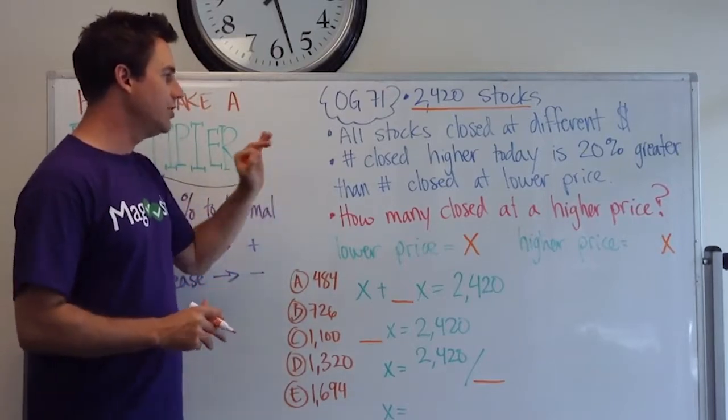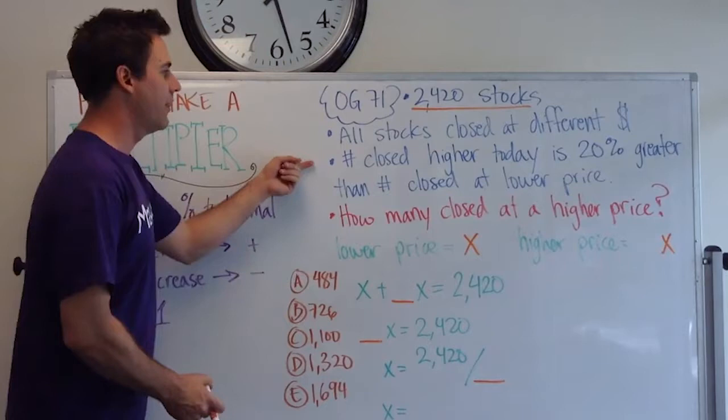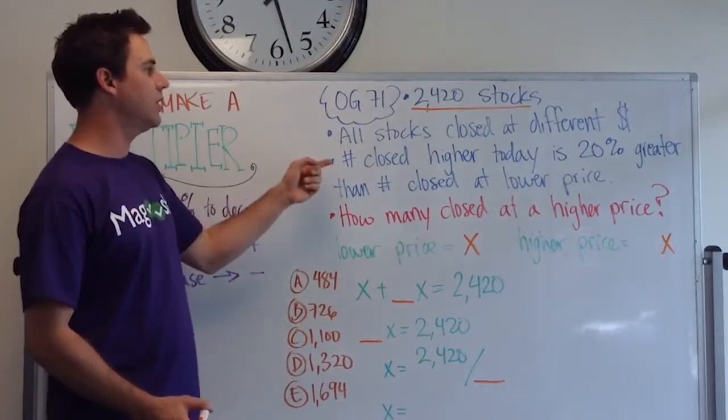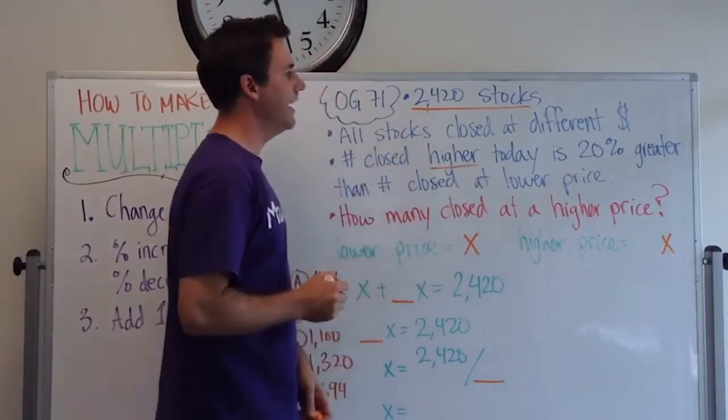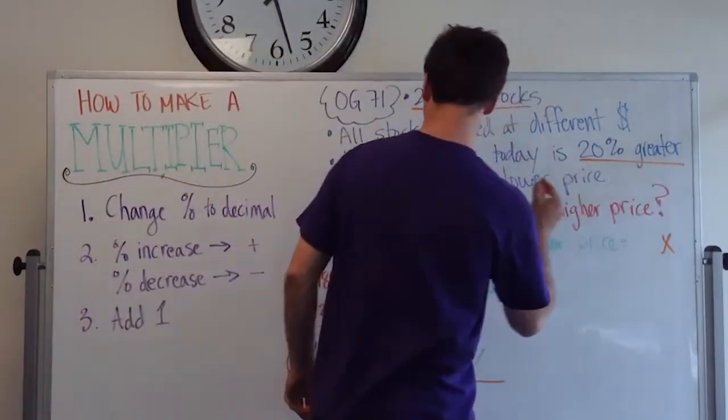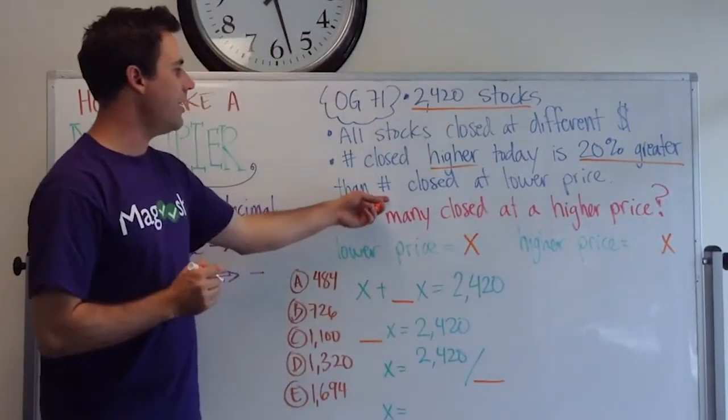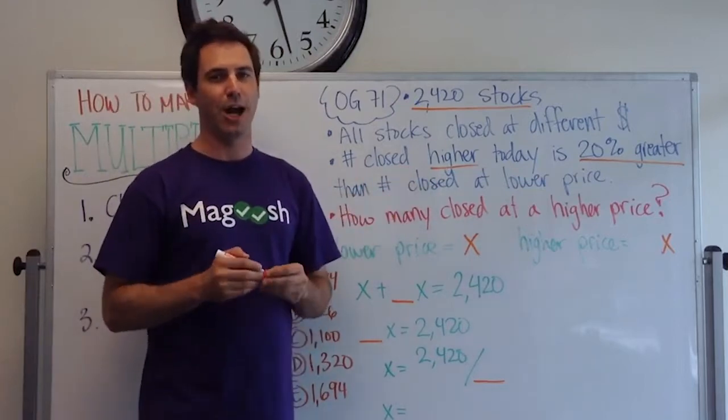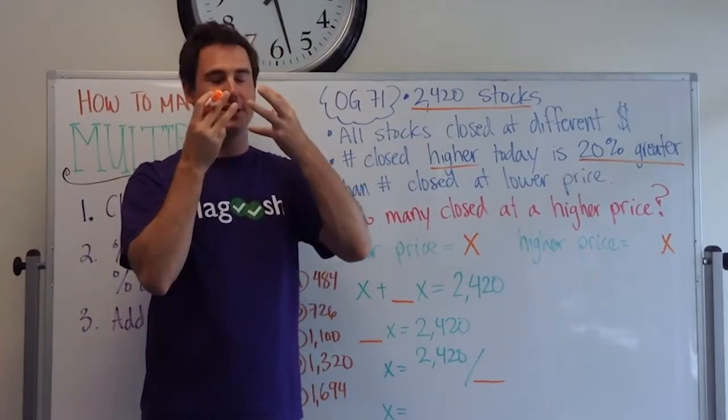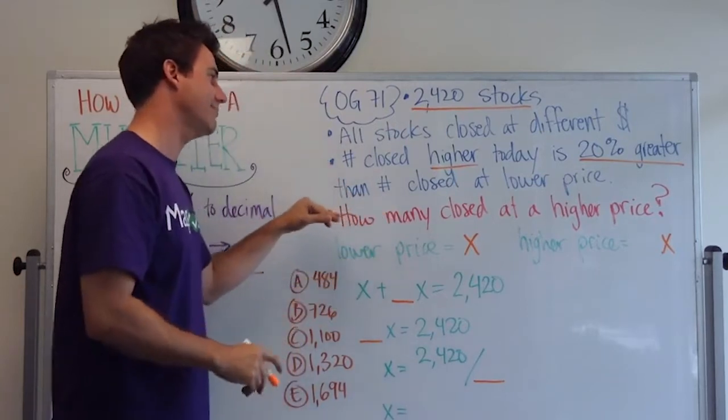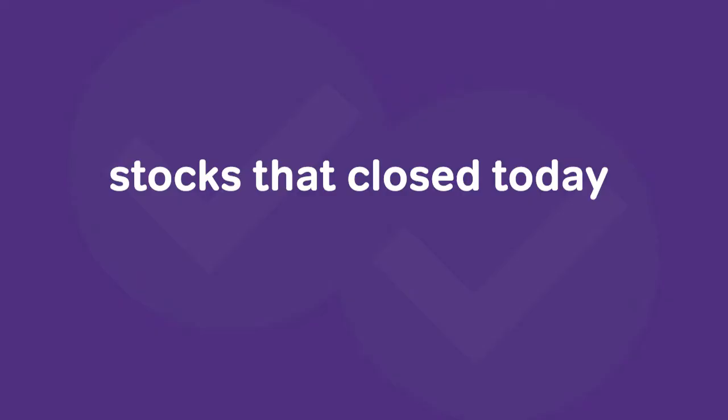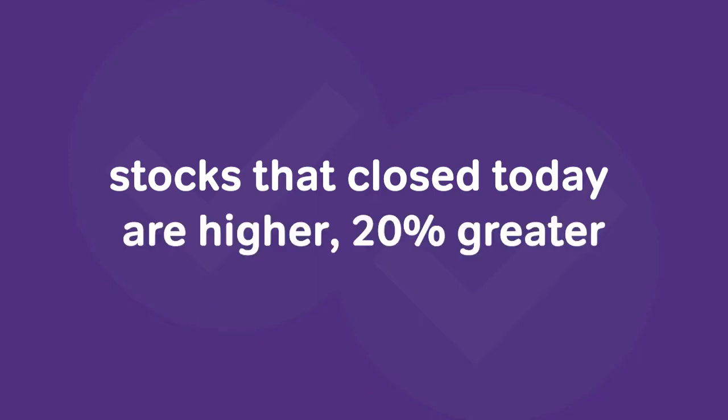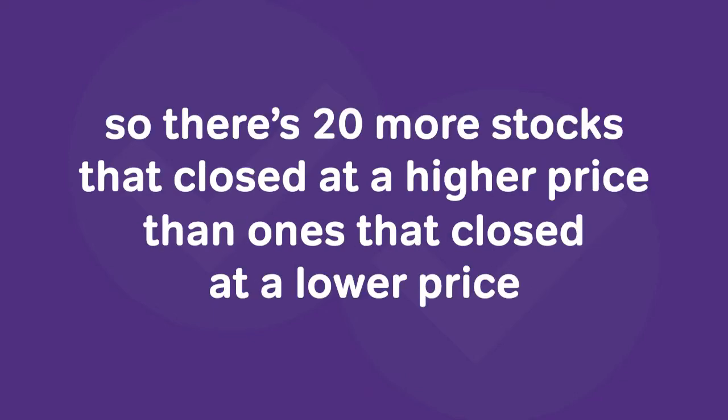Then we're told the useful information that we use to solve this problem. The number of stocks that closed higher today is 20% greater than the number that closed at a lower price. Now that's kind of a lot to weed through and understand, but take your time with it. They're telling us about the stocks that closed today. The number that closed higher was 20% greater. So there's 20% more stocks that closed at a higher price than the ones that closed at a lower price.